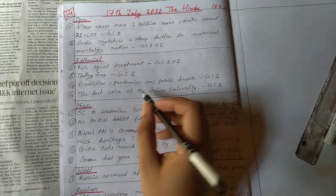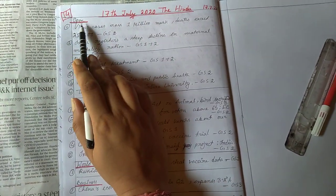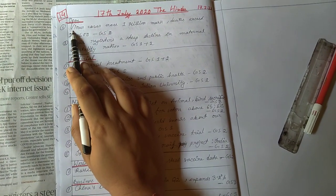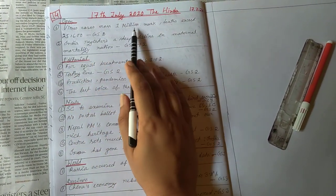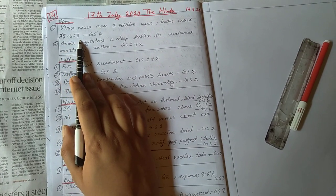So, 17th July 2020, The Hindu News, page number 1. Open page number 1, virus cases cross 1 million mark, deaths exceed 25,600.